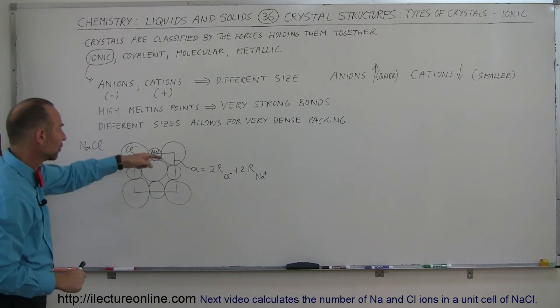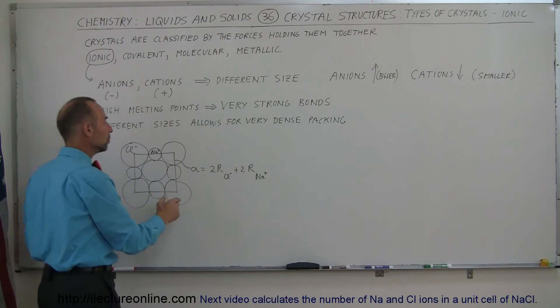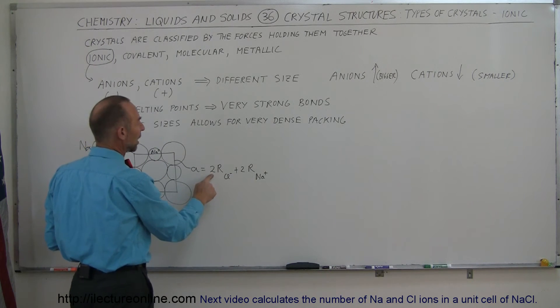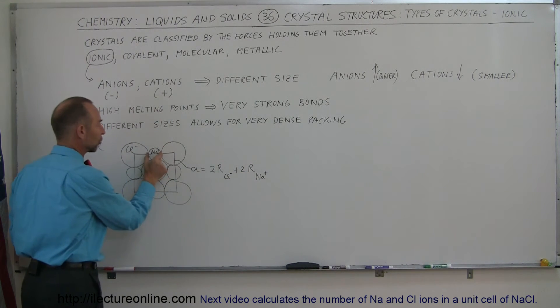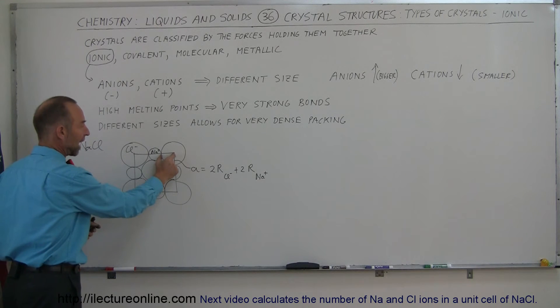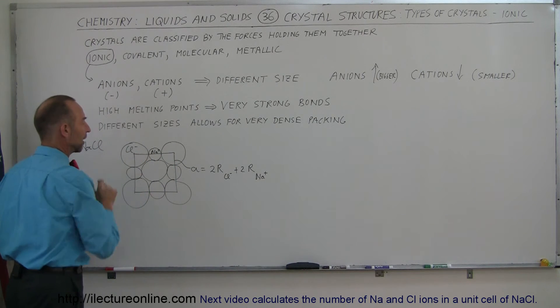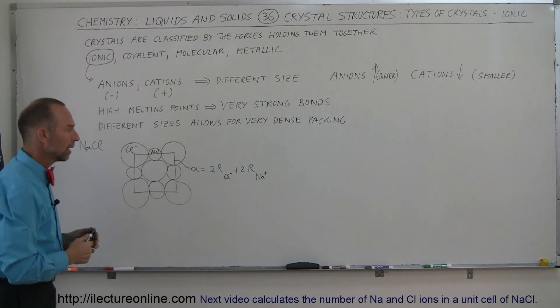Notice, then, that the length of the side of the unit cube is equal to two times the radius of the chlorine ion, plus two times the radius of the sodium ion, because you're taking the full diameter, plus a half a chlorine ion here, plus a half a chlorine ion there.